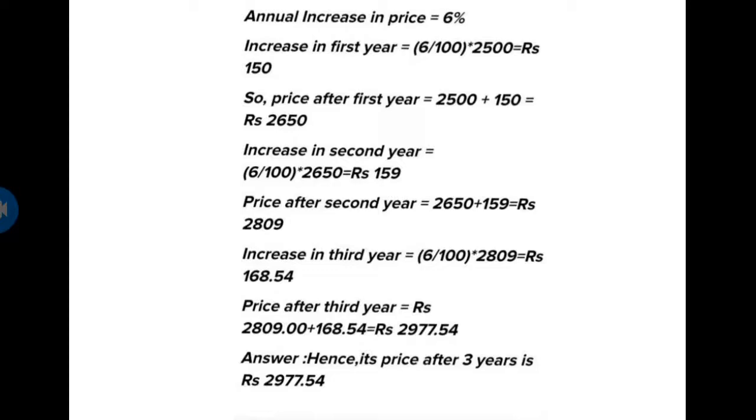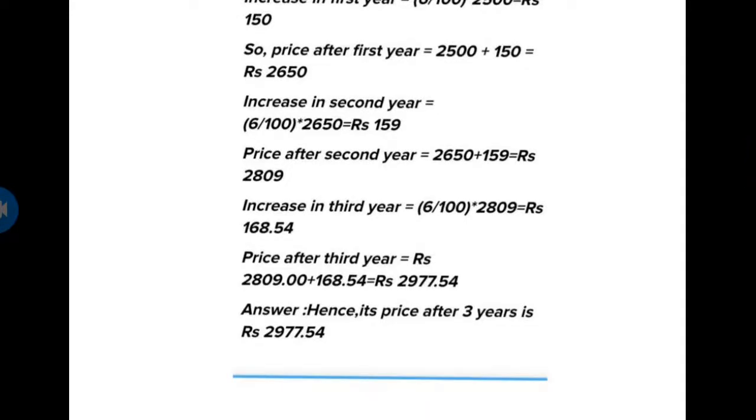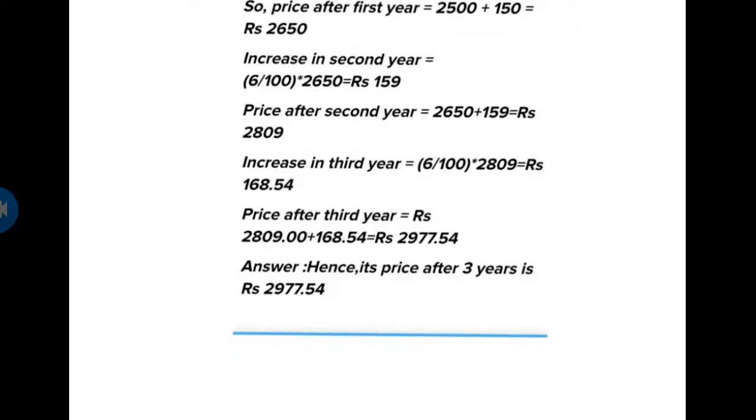Increase in third year is 6 upon 100 multiplied by 2809. When we solve that equation we will get 168.54. Price after third year: we have to add this, so 2809 plus 168.54, we will get 2977.54. So this is our answer.